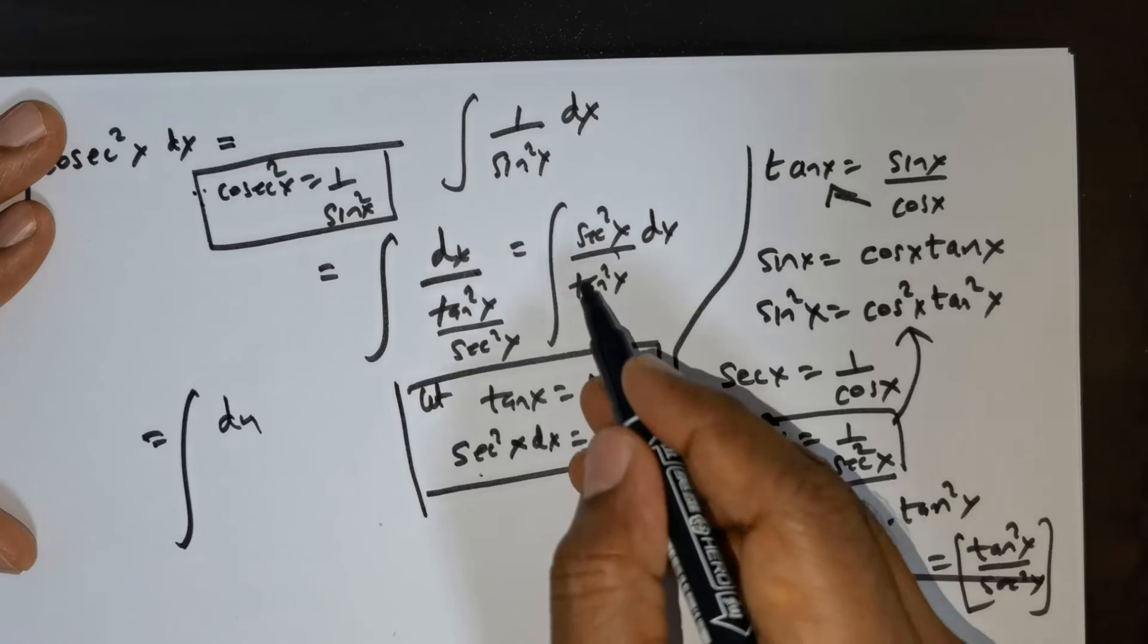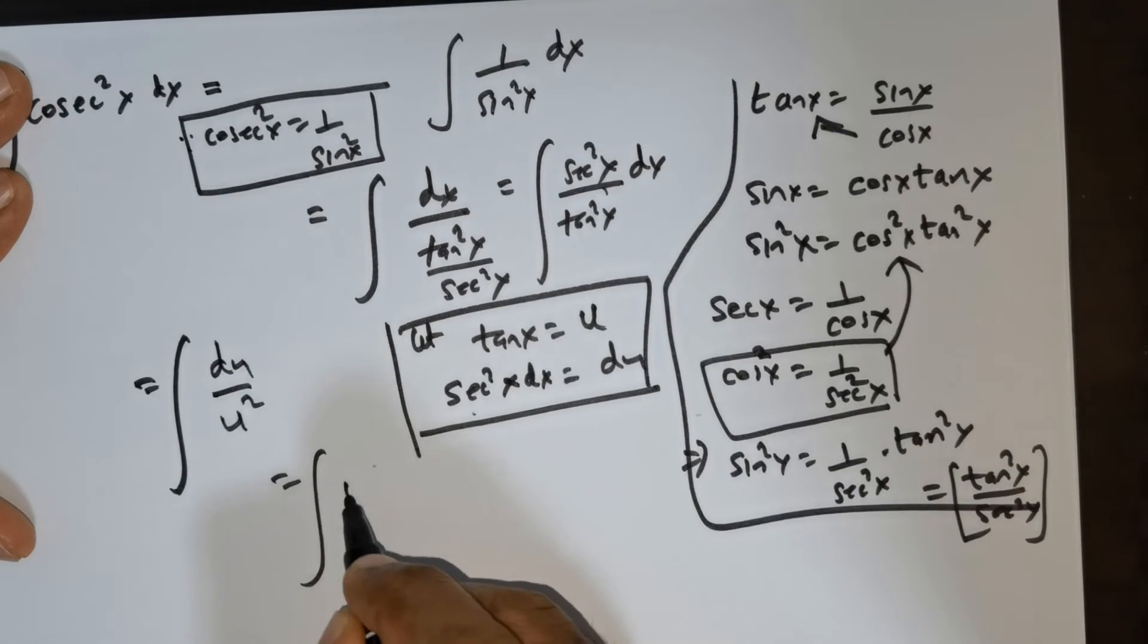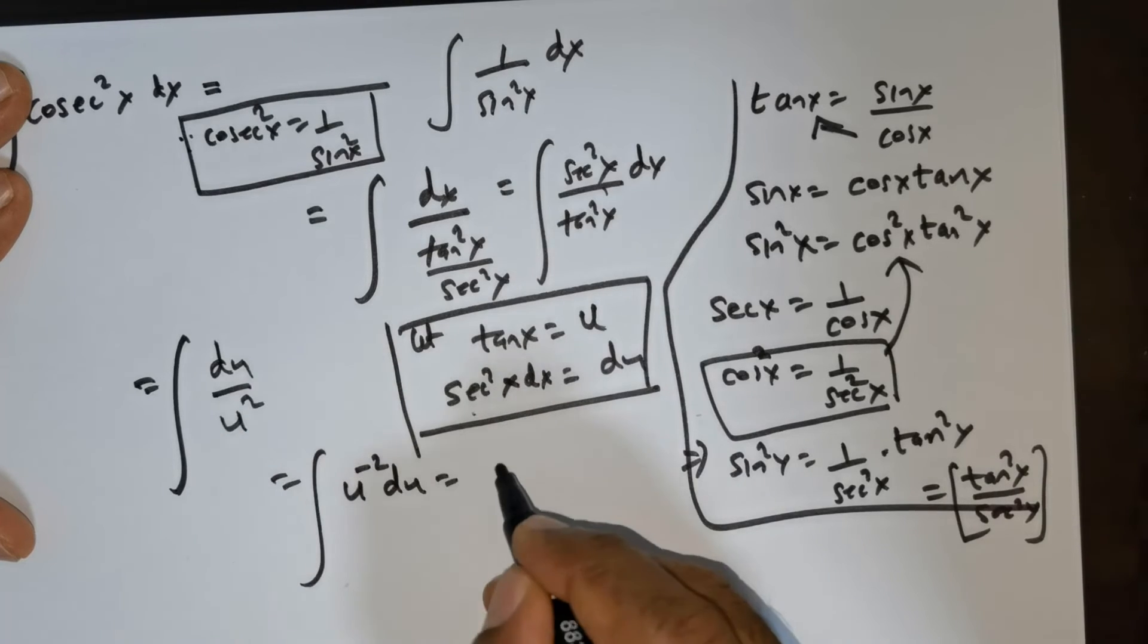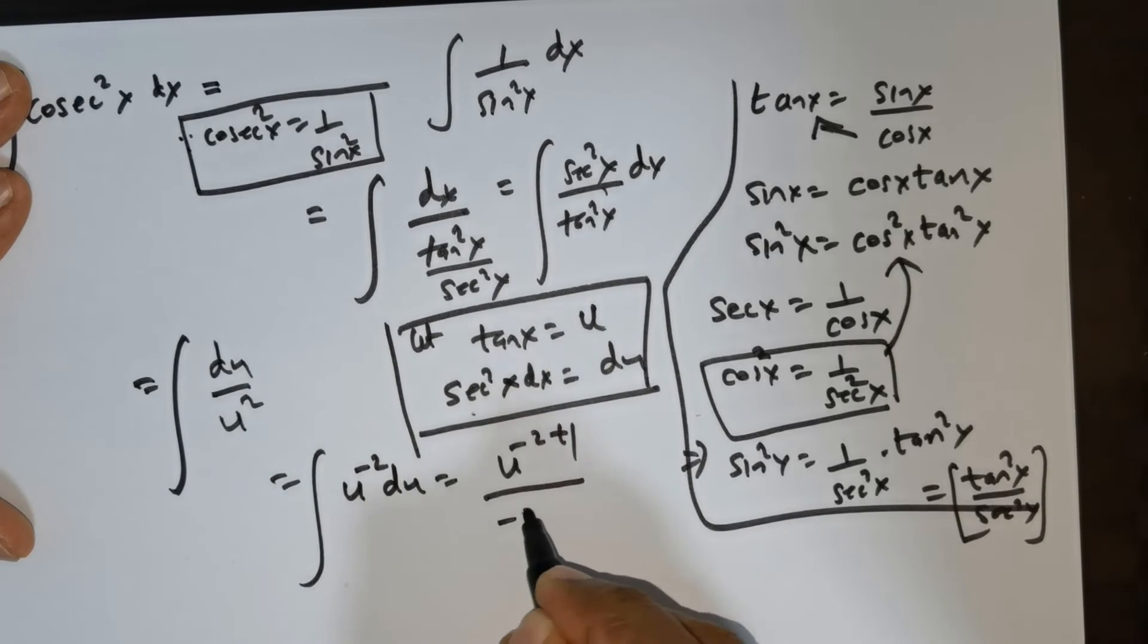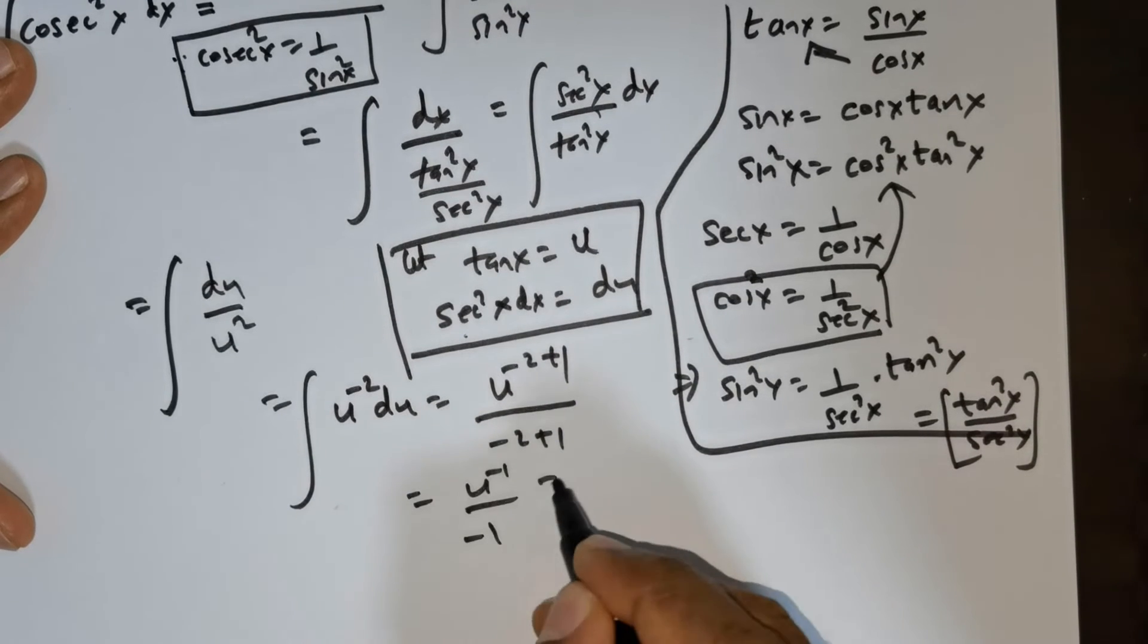You can rewrite this by taking u to the numerator. You integrate: you get u to the negative 2 plus 1, divided by negative 2 plus 1, which is u raised to the power of negative 1, divided by negative 1.